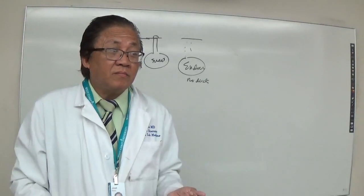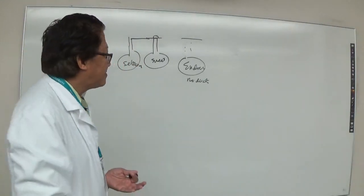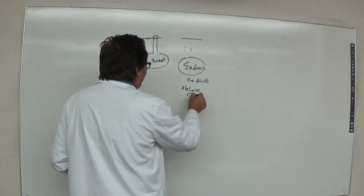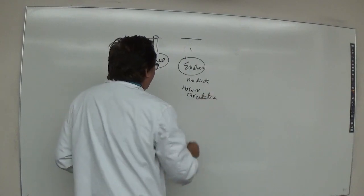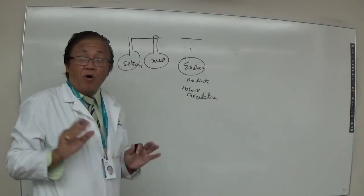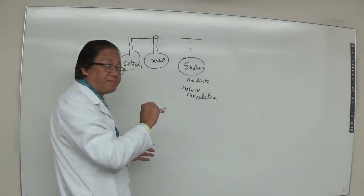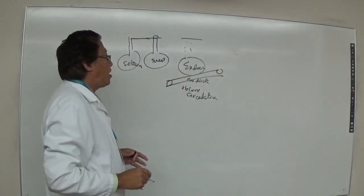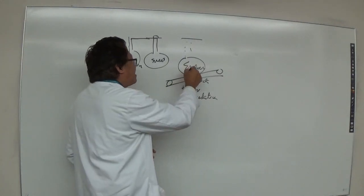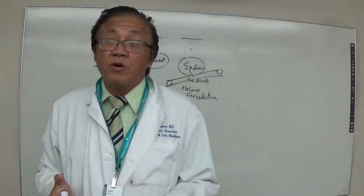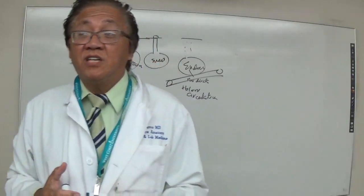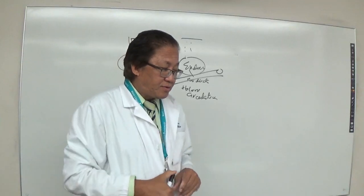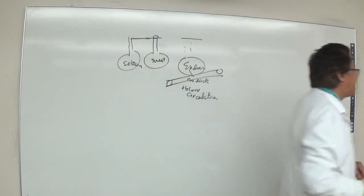How does an endocrine gland reach its target organs? Through the blood circulation. The endocrine gland is surrounded by blood vessels, and whatever secretion it has goes into the blood, allowing it to reach its target organ even without ducts.